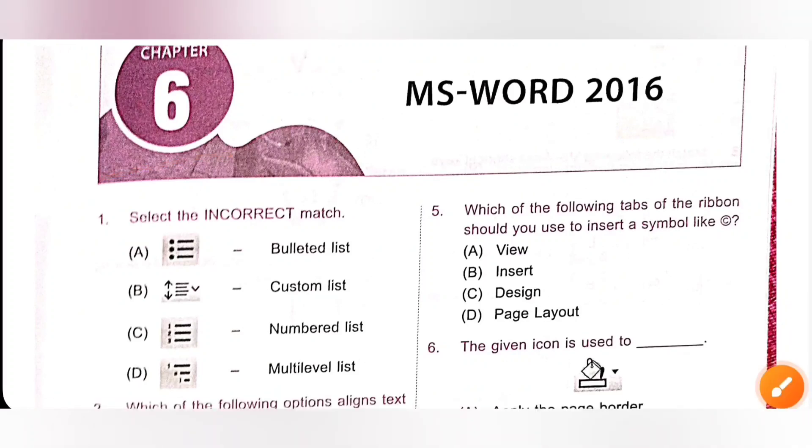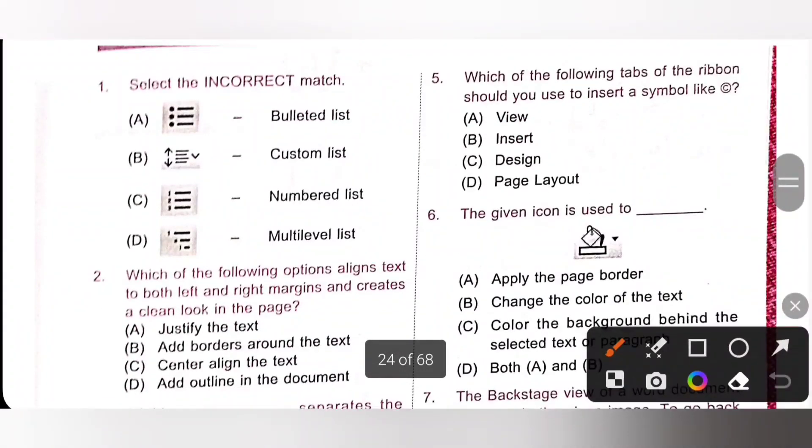So first one, select the incorrect match. So we need to select the incorrect match. Option A bullet list, yes it is the correct match. B custom list, it is the incorrect match. C numbered list, yes. D multilevel list, yes. So option B is the incorrect match. Actually this command button is used to change the spacing between lines of the text. It is used to change spacing between lines of text, so it is not a custom list. So option B.